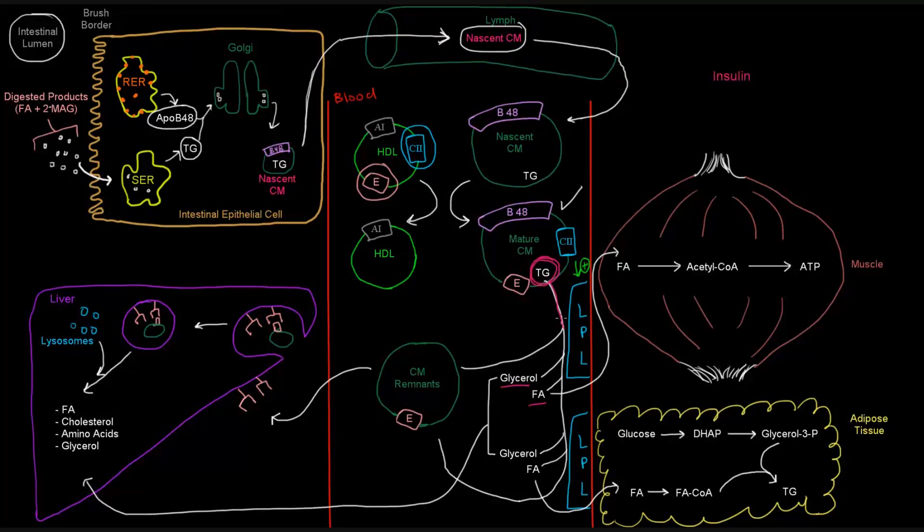The lipoprotein lipase is anchored on the wall of the capillary in the bloodstream. So when those triglycerides come to it, they're going to get cleaved into glycerol and fatty acids. And these lipoprotein lipases are going to be near muscle tissue and adipose tissue. So what happens is that the glycerol and the fatty acids hop off once this triglyceride is broken down. The fatty acids get taken up by the cells. In this case, here to the muscle and over here into the adipose tissue.